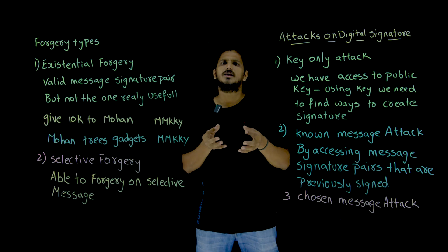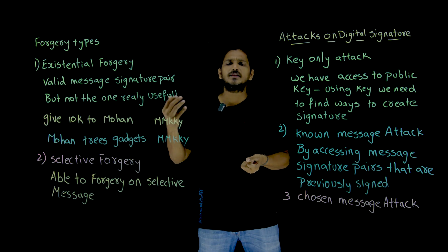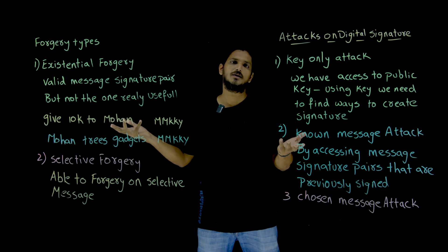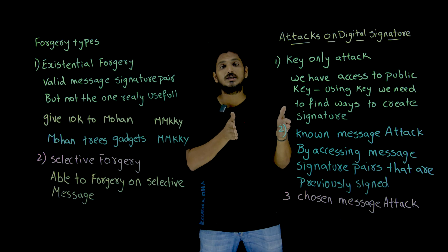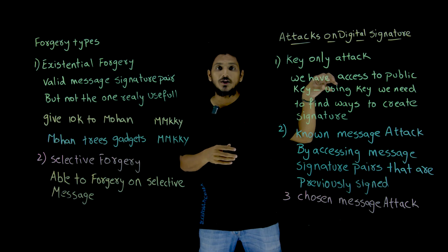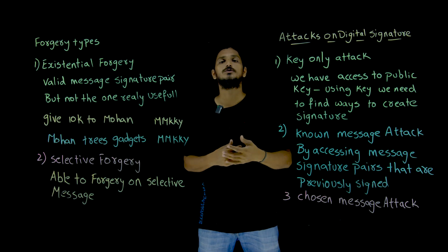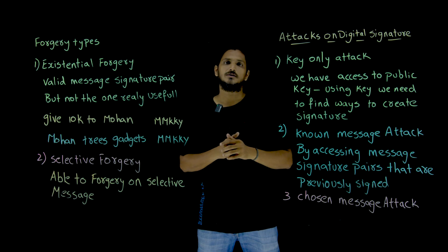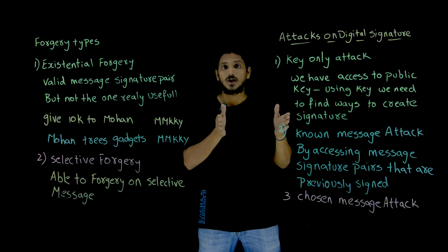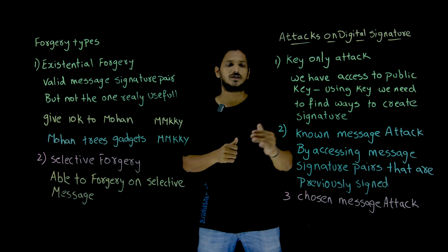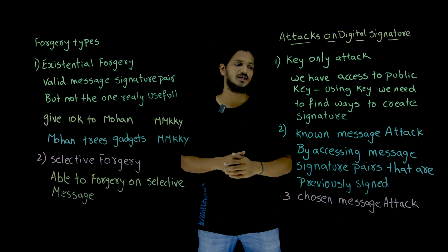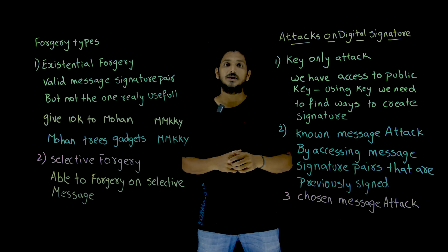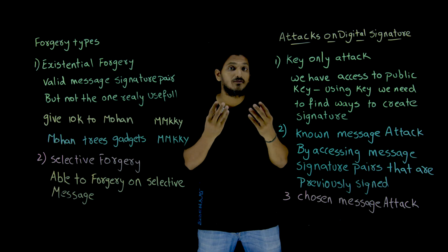We already discussed in our previous classes: given a public key, identifying the private key — is it possible? No, it is not possible if you use longer keys. If your key size is 1024 bits, it is very very impossible. The problem is a logarithmic problem, so if you are going to use large keys it is not possible.